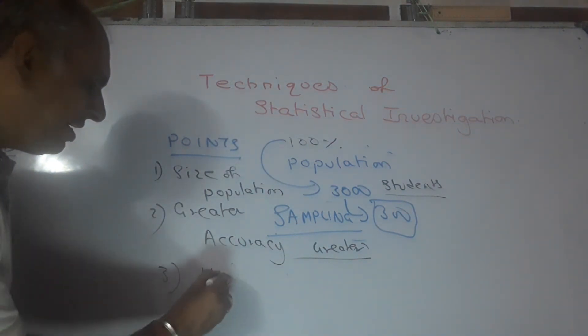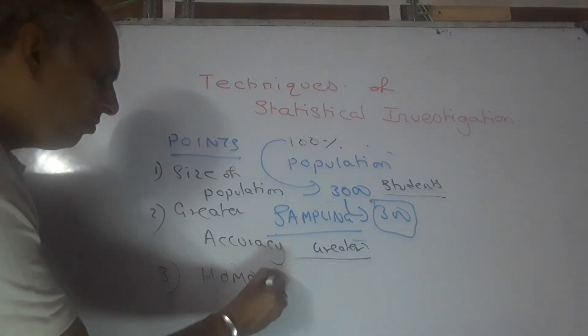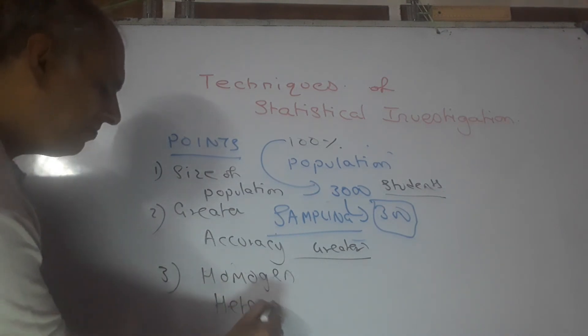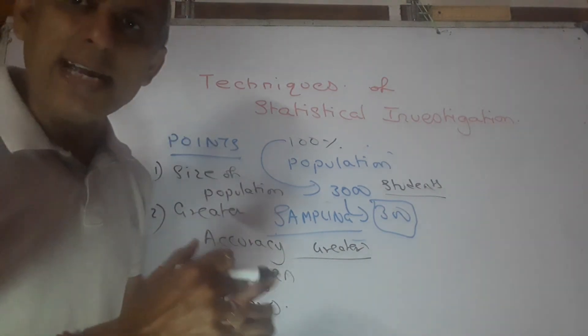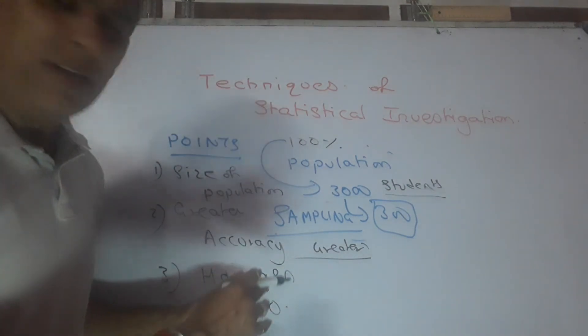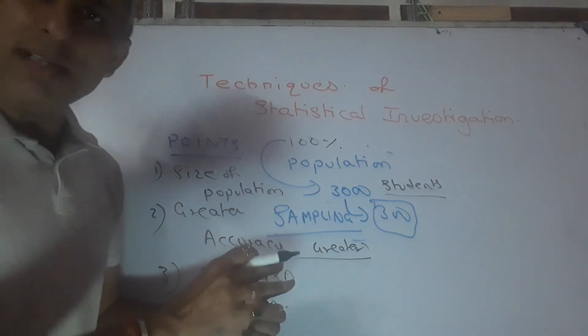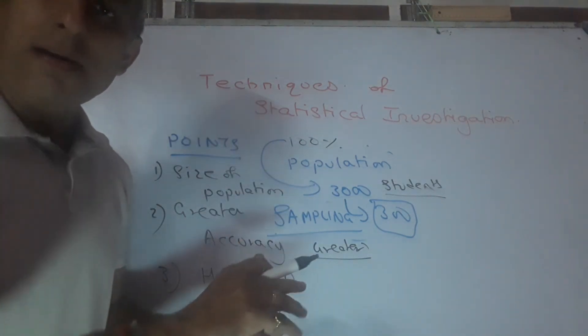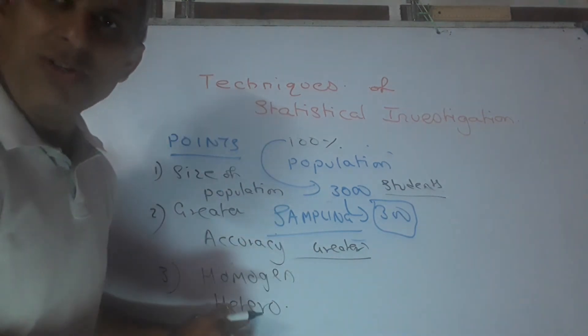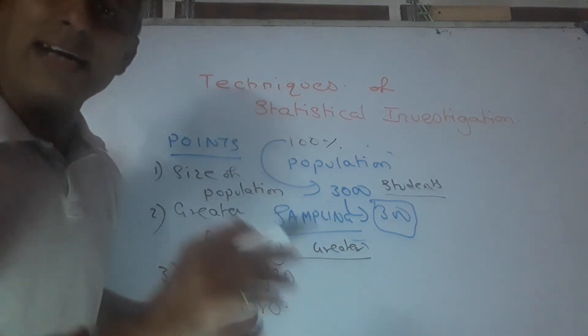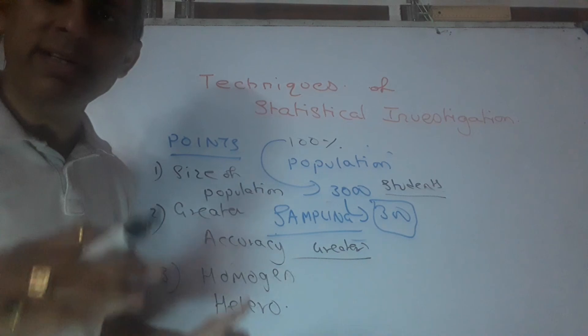What is the nature of the population? Is it homogeneous or heterogeneous? Homogeneous means same type, then you can go with smaller sample. But if it is variety, then heterogeneous, then you should be having a larger sample. I hope all of you understood it. Thank you.